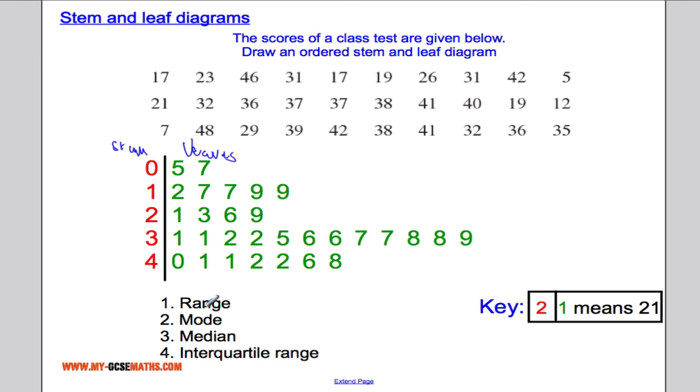Right, now we want to use our stem and leaf diagram to answer these questions. So I want to work out what the range is, and if you've looked at my previous video, the range is the biggest value take away the smallest value. Make sure that we interpret our stem and leaf diagram correctly, so it will be 48 take away 5. 48 take away 5 leaves us with 43.